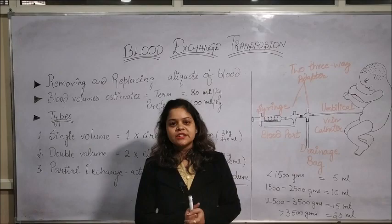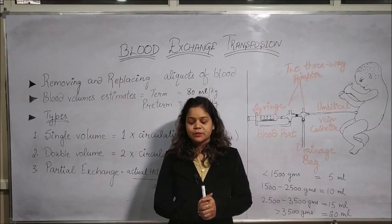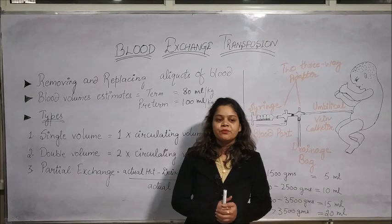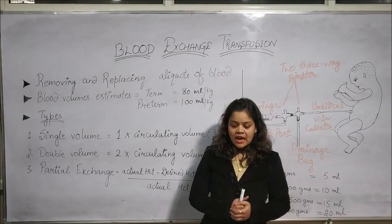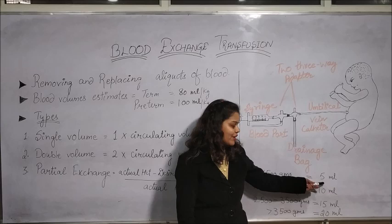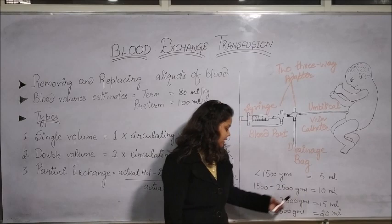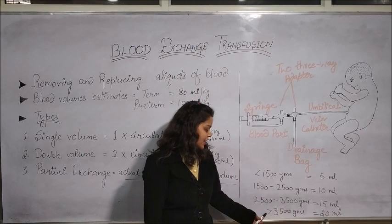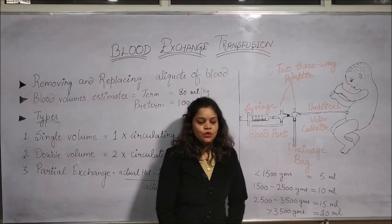For the procedure, a medical officer and a trained nursing officer are required, and it is performed under sterile techniques. The blood used should be whole blood, freshly collected, not older than 5 days. Exchange of blood is done in small aliquots: less than 1500 grams — 5 ml per aliquot; 1500 to 2500 grams — 10 ml; 2500 to 3500 grams — 15 ml; and above 3500 grams — 20 ml per aliquot.